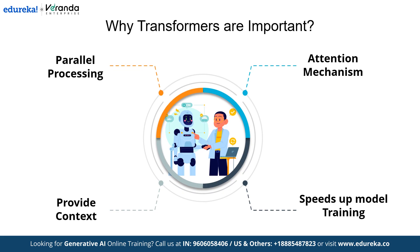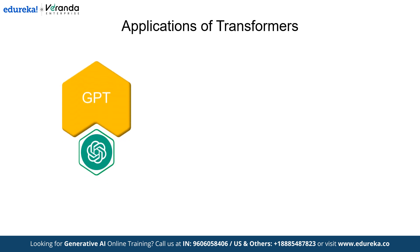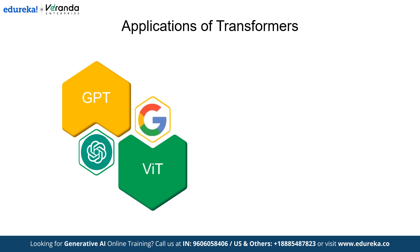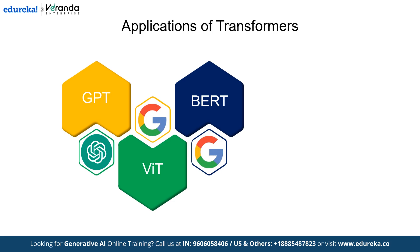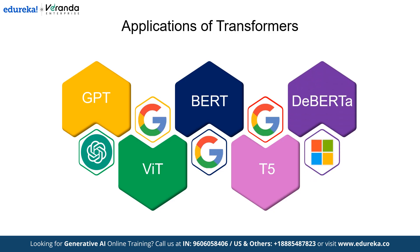Now let's discuss some applications. We have OpenAI's GPT, a groundbreaking model that leverages the power of transformers for natural language processing tasks. Additionally, Google has developed several transformer-based models, including Vision Transformers for image recognition, BERT — Bidirectional Encoder Representations from Transformers — for understanding the context of words in a sentence, and T5 — Text-to-Text Transfer Transformer — for a wide range of text generation tasks. Microsoft has also contributed with DeBERTa — Decoding Enhanced BERT with Disentangled Attention — a model designed to improve contextual understanding and enhance NLP applications.